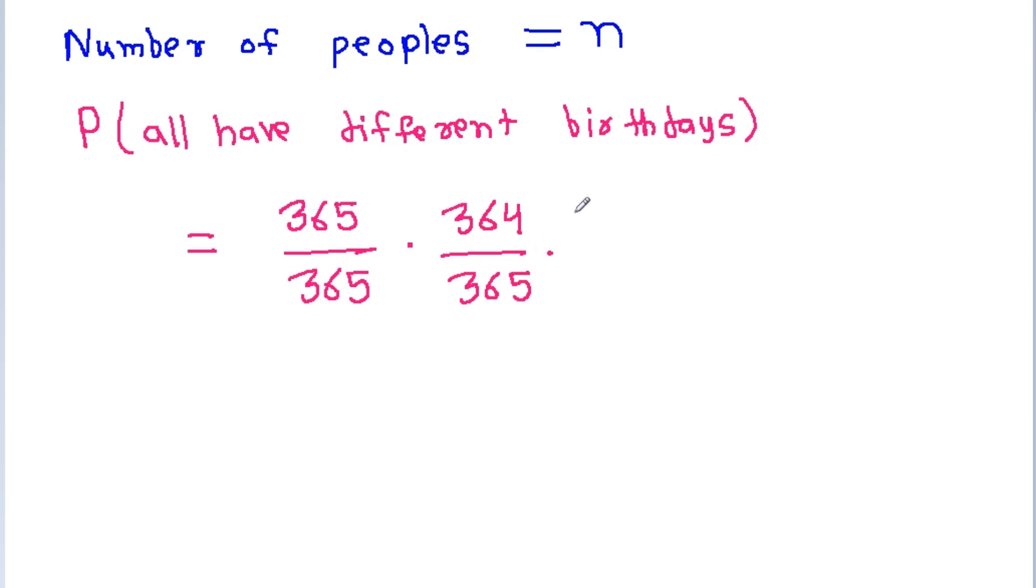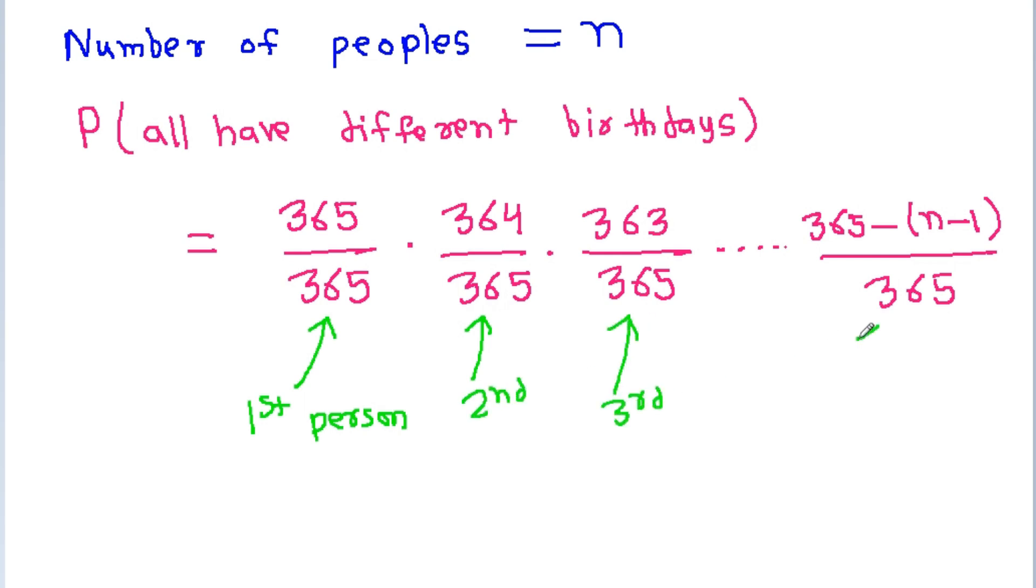Similarly, for the third person, 363 days left out of 365 days. And for the nth person, it will be 365 minus (n-1) by 365. Here, this is for first person, this is for second person, this is for third person, and this is for nth person.